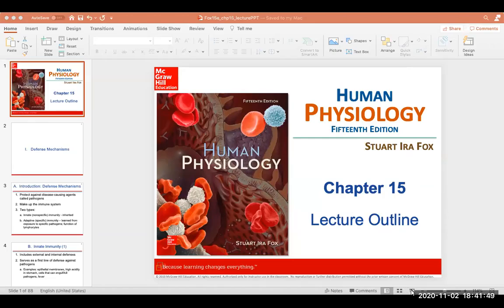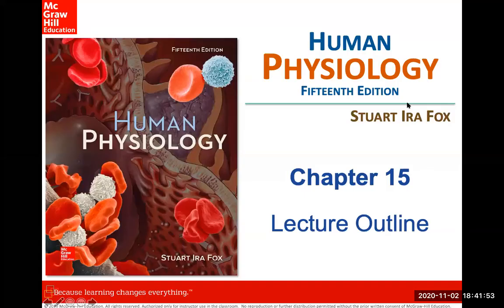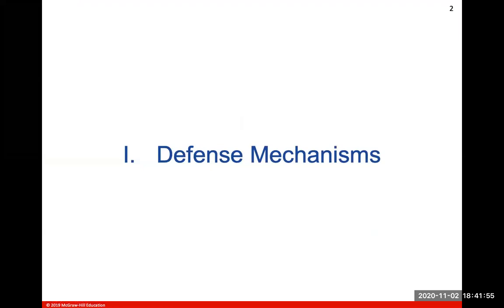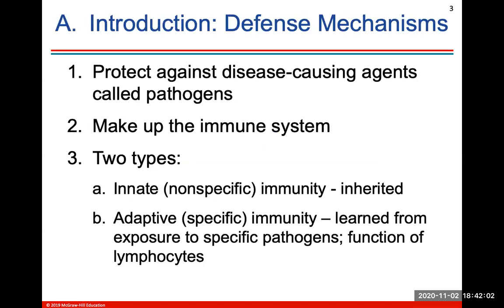Hi class, and welcome to chapter 15. Chapter 15 is on the immune system. The lymphatic system is kind of included in this, but it's the body's way to defend itself against anything foreign, whether that's some sort of disease or other substance. An introduction to the body's defense mechanisms: it will protect against any disease-causing agents, and we call any agent that causes a disease a pathogen, and these make up the immune system.